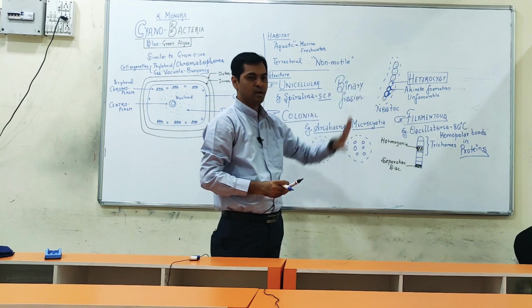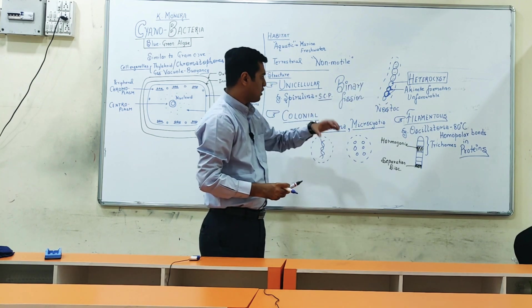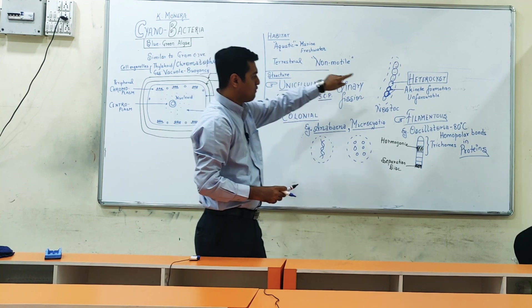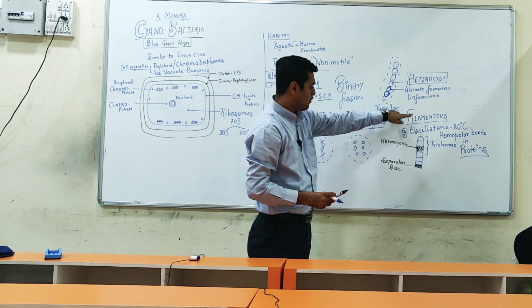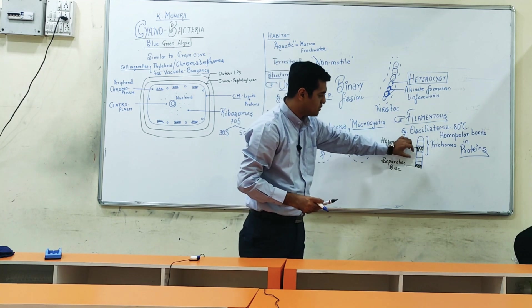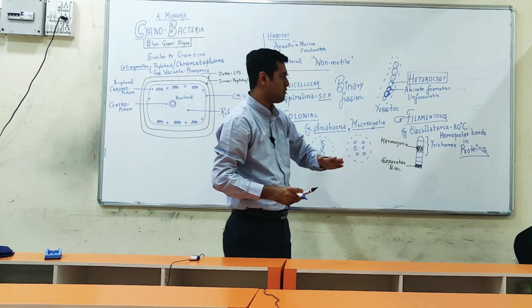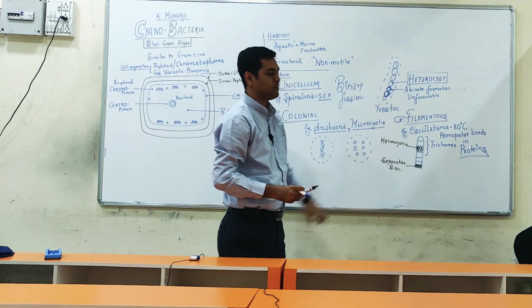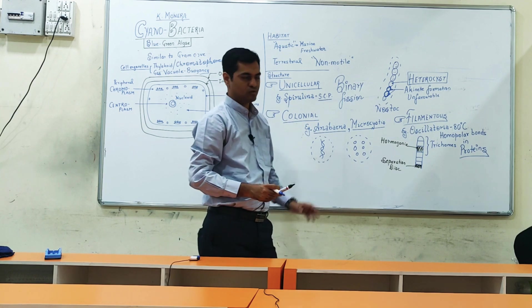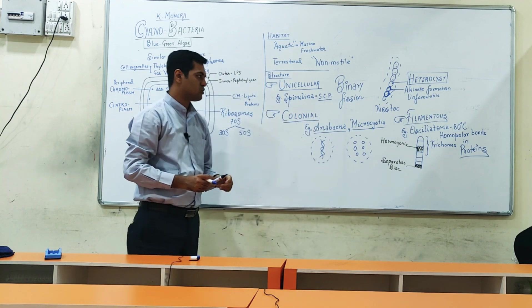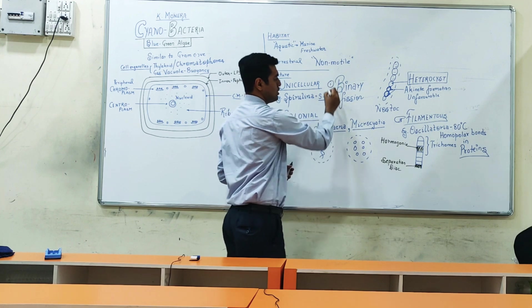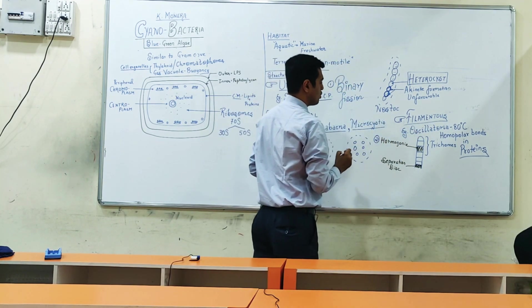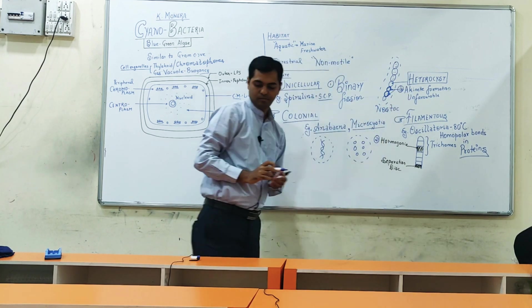Finally, the mode of reproduction we discussed: binary fission in unicellular forms or colonial forms; in filamentous forms there is formation of hormogonia or separation disk through which it separates into multiple fragments; and akinete formation in colonial forms where a thick cell wall layer forms during unfavorable conditions. So that is about the mode of reproduction. To note down: number one is binary fission, number two is hormogonia or separation disk formation, number three is akinete formation.